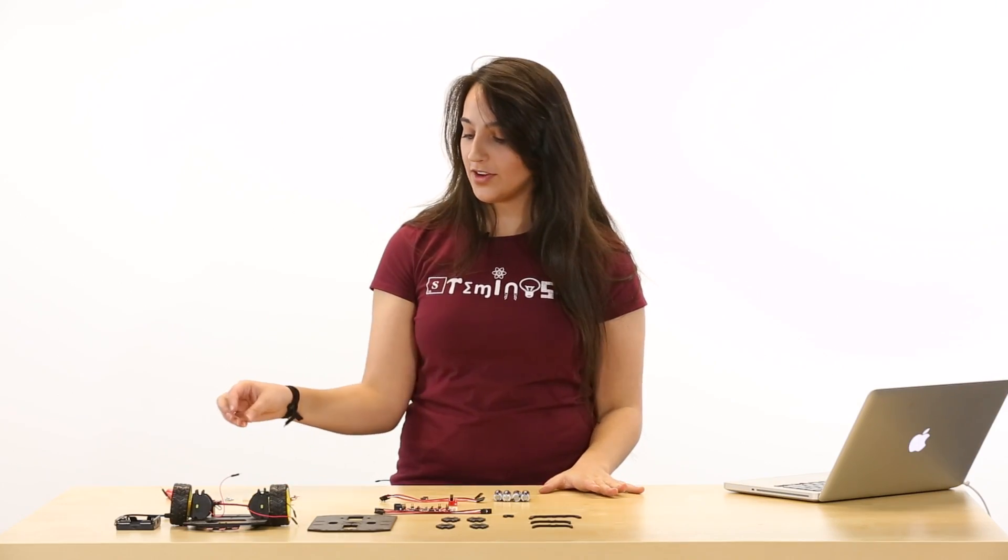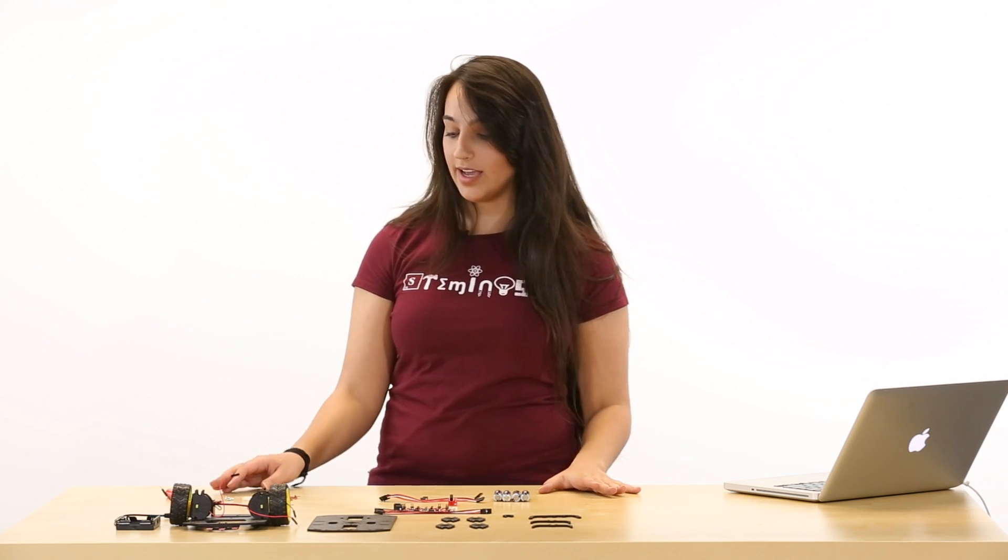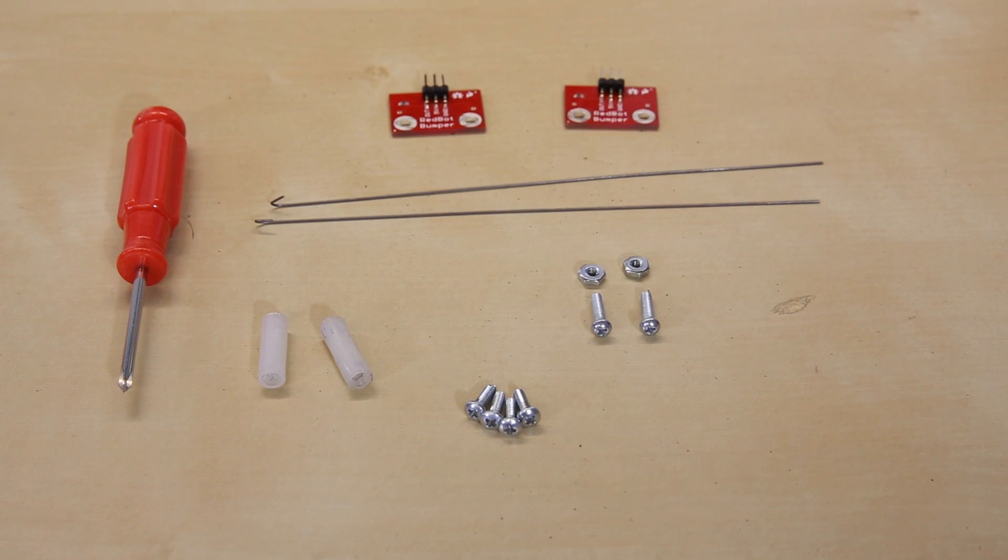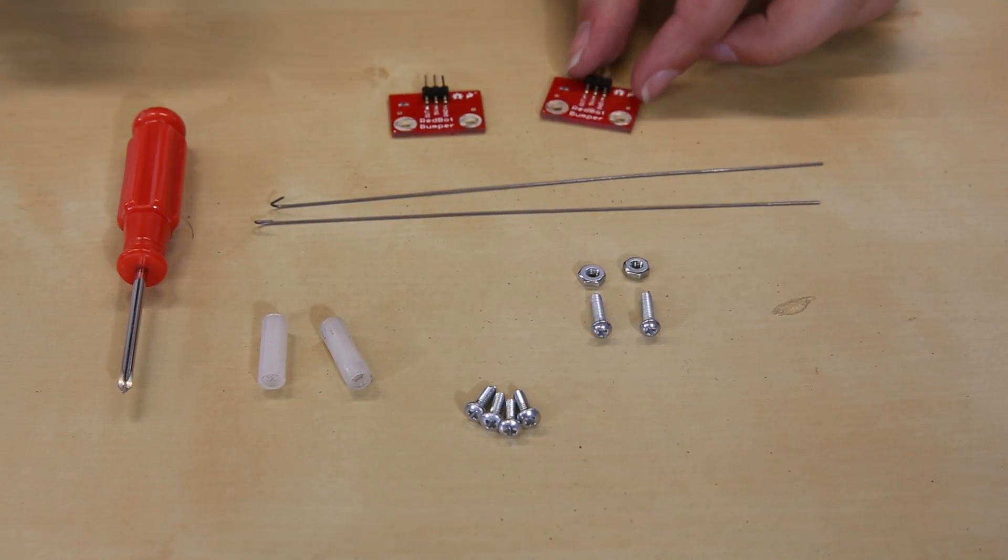Okay, now we're going to put together the bumper boards, if you have the SIK kit for RedBot. This is just some screws, some whiskers and mounting the boards onto the top plate.